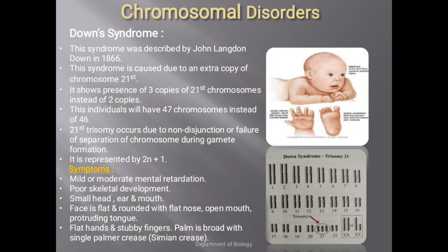Now we discuss chromosomal disorders, which are caused due to entire chromosomal abnormality or addition or deletion of chromosomes. The first is Down syndrome, described by John Langdon Down in 1866. This syndrome is caused due to an extra copy of chromosome number 21, showing the presence of three copies of chromosome 21 instead of two — a condition called trisomy 21.